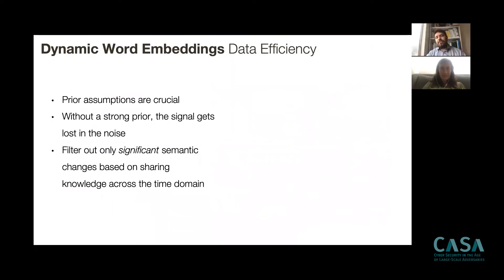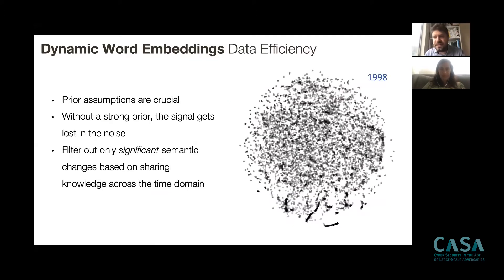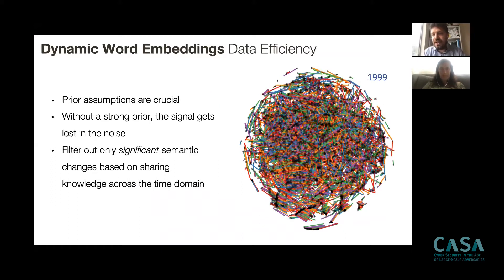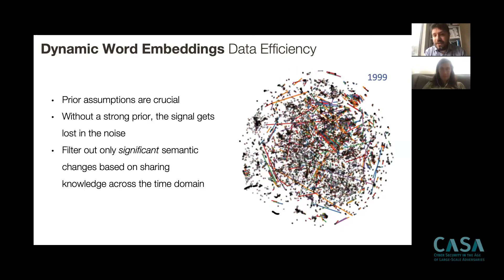Why is this a good example of resource-efficient learning? Prior assumptions in these models were very important. Without a strong prior, the signal gets lost in the noise. If you naively compared word clouds in consecutive years, you'd get a dense plot where all words seem to change — clearly an artifact of insufficient data. When applying our Kalman filtering approach trained jointly end-to-end, you get a much sparser plot where only significant semantic changes appear. This is a good example of data-efficient learning.